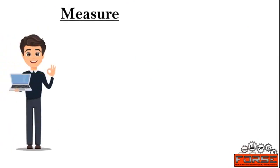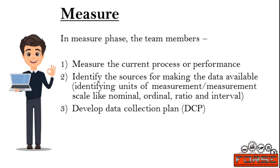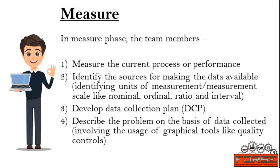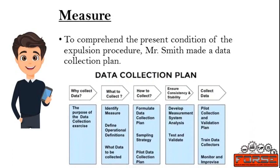Once the Define phase was completed, he moved on to the Measure phase. In the Measure phase, the team members measure the current process performance, identify sources for data, identify units of measurement and measurement scales such as nominal, ordinal, ratio, and interval, and develop a Data Collection Plan. Mr. Smith made a data collection plan to comprehend the present condition of the extrusion process, estimating the measure of rejected material during the extrusion process. Data was gathered for 30 weeks, with 10 three-hour trials conducted every week. After this period of measurement, the organization could determine the level of unused work-off material created in the tread and sidewall extrusion processes.